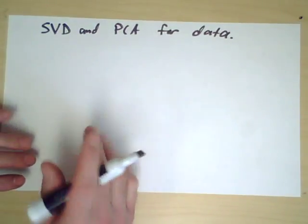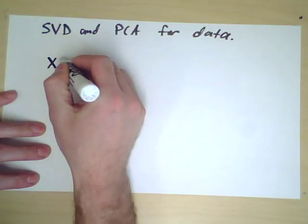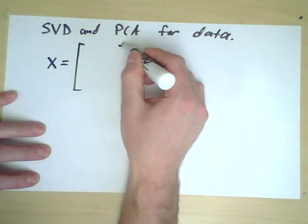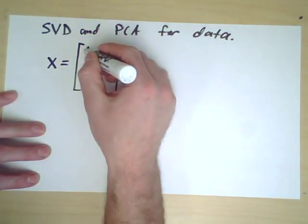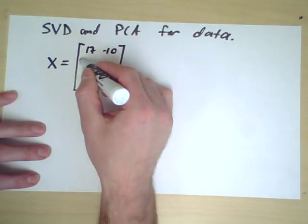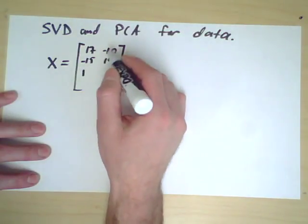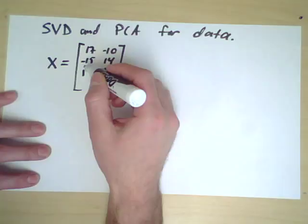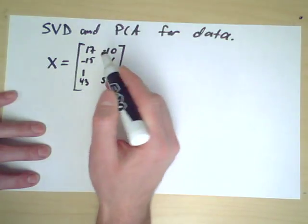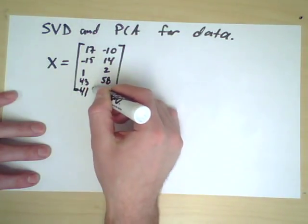Let's do a quick example. Let's suppose someone gives you a data set X which consists of five points in R2: 17, -10; -15, 14; 14, 12; 43, 58; and -41, -54.